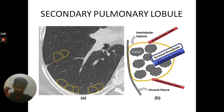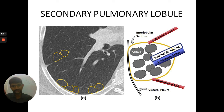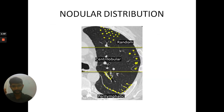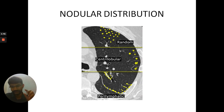Now we know how to localize the secondary pulmonary lobule on a CT scan. After localizing it, just based on the distribution of nodules within the secondary pulmonary lobule, we can narrow down to the diagnosis. There are basically three types of nodule distributions: random, centrilobular, and perilymphatic.